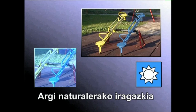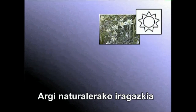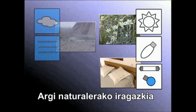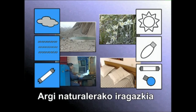Argi naturala iragazteko iragazkiak bi aukera ematen digu: eguzkiaren argiaren zein eguneko argia ematen duten lampen zuzeneko erasoa iragaztea, eta egun goibel euritsuetako zein hainbat lampara fluorezenteren argiaren erasoa iragaztea.